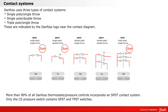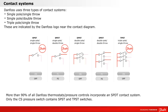There are a number of contact systems available in the industrial marketplace. Danfoss uses three types: single-pole single-throw, single-pole double-throw, and triple-pole single-throw. These are indicated by the Danfoss logo near the contact diagram.